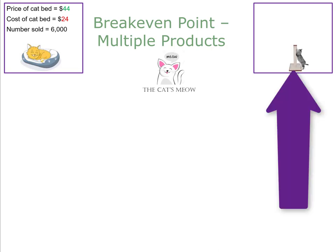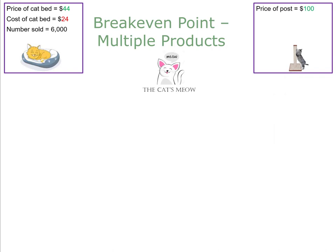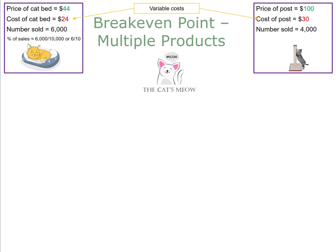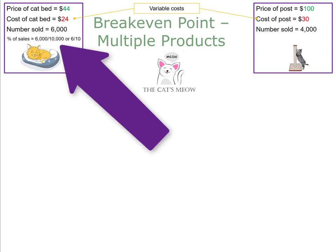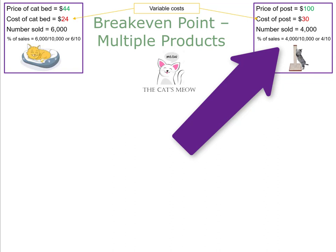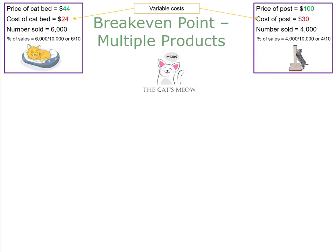The other product is a scratching post, which sells for $100 each and costs the company $30 each — a variable cost. They sold 4,000 scratching posts. In total, 10,000 items were sold: 6,000 cat beds represent 60% of sales, and 4,000 scratching posts represent 40% of sales. The fixed costs are $40,000.